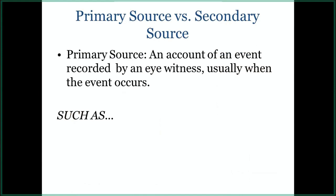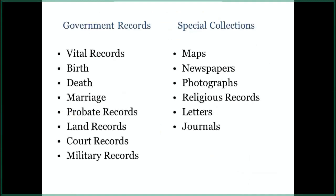A primary source is an account of any event recorded by an eyewitness. For government records that includes vital records — birth, death, and marriage — as well as probate records like wills and inventories, court records, land records, and some military records for the Civil War and Revolutionary War. For non-government special collections, popular resources for genealogy include maps, historical newspapers, historical photographs, religious records like baptisms and burial records, and personal letters and journals.